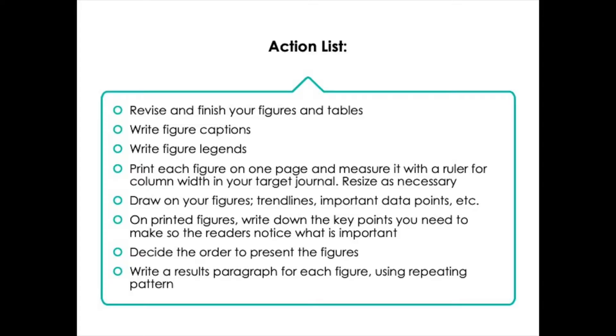Look back to the slide where I showed you all of the parts that need to be in a figure legend and make sure you include all of that information. Next, print each figure on one page, measure it with a ruler, and make sure that the width of your figure matches the column width in your target journal, then resize it as necessary. It's important to do this before you submit because many journals will publish your figure at the exact size submitted, or shrink it to fit the column width — and if they shrink it, it might not read very well. Make sure you can still see all the symbols and that all letters and fonts are large enough when printed at column width.